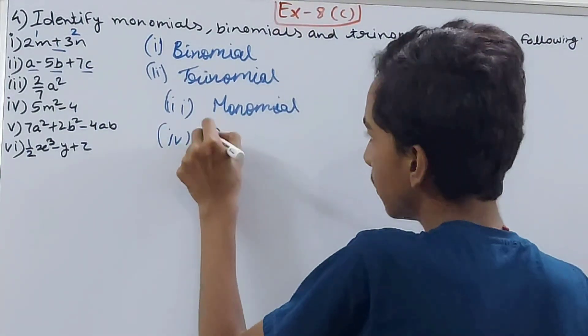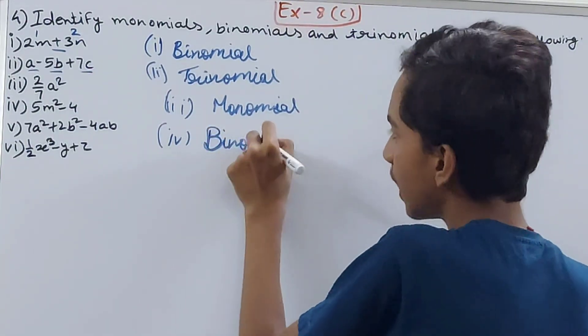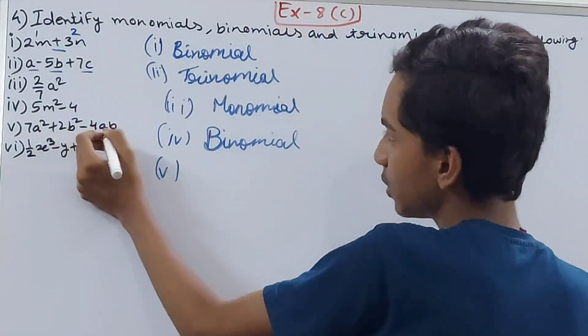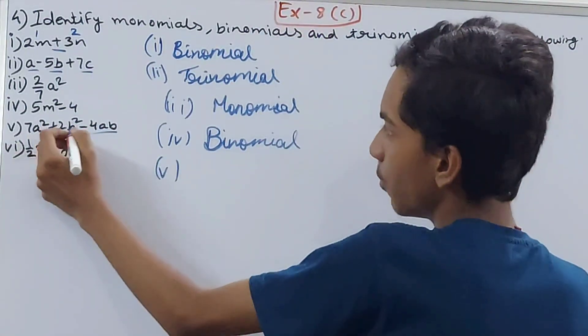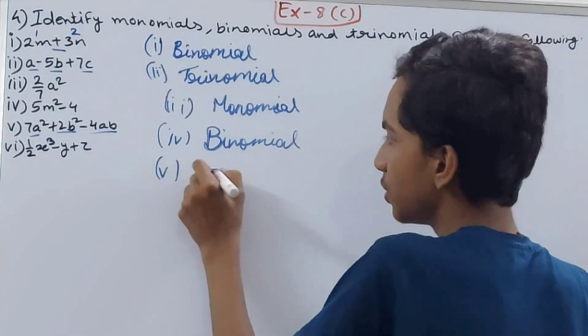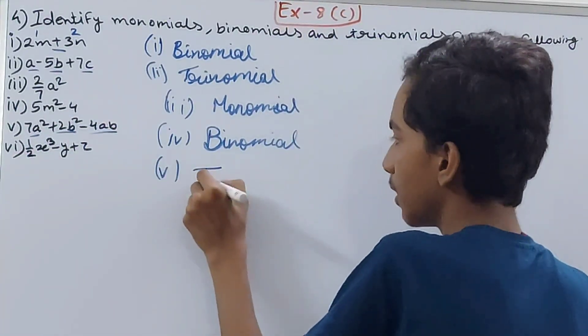The fifth one: 7a² + 2b² - 4ab. Again, 1, 2, 3 - three terms separated by plus and minus. So this is a trinomial.